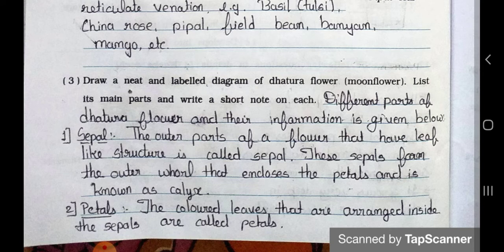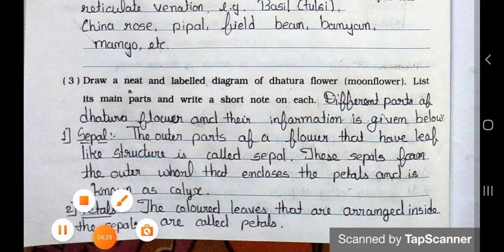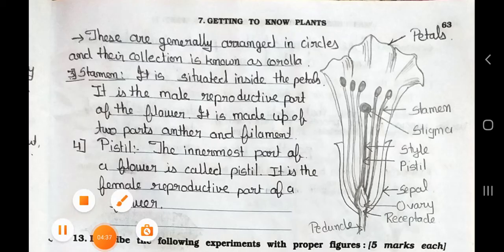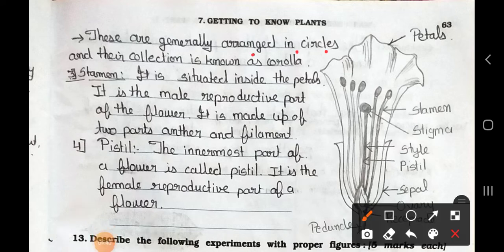Number 2, petals. The colored leaves that are arranged inside the sepals are called petals. Now see the next page. These are generally arranged in circles and their collection is known as the corolla. See, here is the calyx. Now here is the petal. This one is the stamen. It is situated inside the petals.